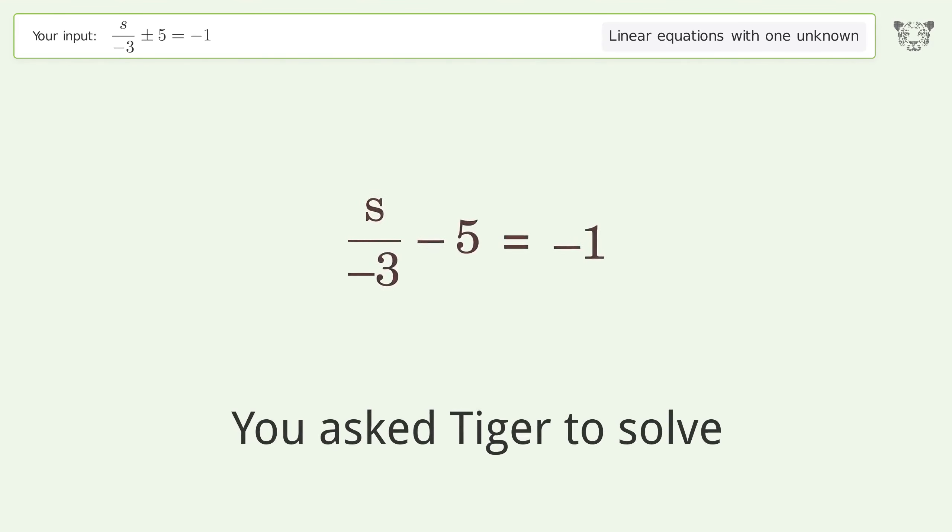You asked Tiger to solve this. This deals with linear equations with one unknown. The final result is s equals negative 12.